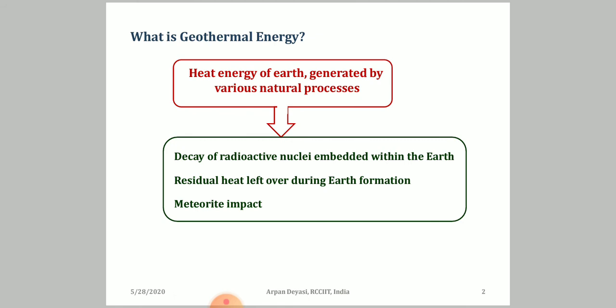The third source, which doesn't happen in a periodic manner but is still important, is called meteorite impact. A meteorite impact normally occurs with a very large time gap between two consecutive events. But once a meteorite impacts on the Earth's surface, it generally goes deeper into the Earth's layers because of the large velocity it carries. That amount of energy embedded inside layers of the Earth's surface can also be extracted and considered as a type of geothermal energy.